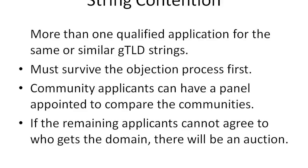The next phase is string contention — where there's more than one surviving application for the same or similar top-level domain strings. There's a special process for community applications where a panel compares the communities to see who best represents them. Normally, applicants should try to work together to agree on who gets the domain. But if they can't agree, there will be an auction, with proceeds going toward some charitable purpose of ICANN relating to the top-level domain system.